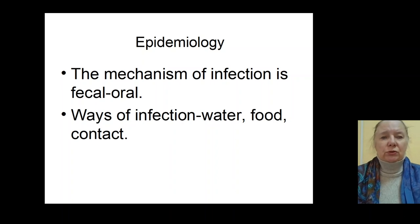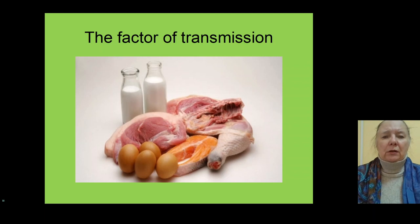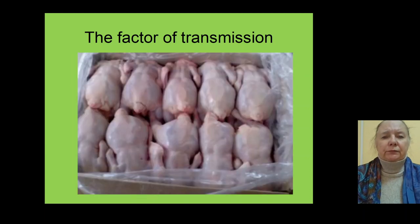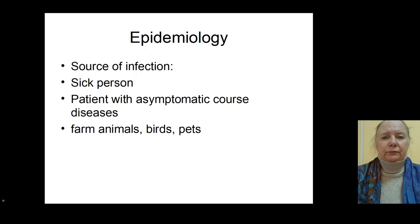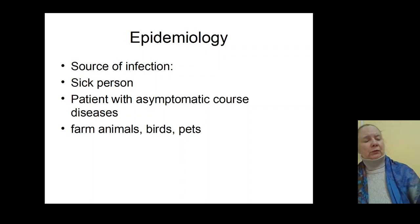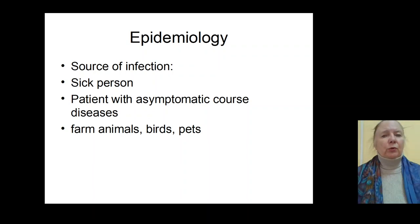Sometimes the way of infection is through contact with patients and carriers. Food factors of transmission include eggs, meat, and milk. Sources of infection are patients, carriers, and patients with asymptomatic forms of infection. Sometimes causes of infection are farm animals, birds, and pets.